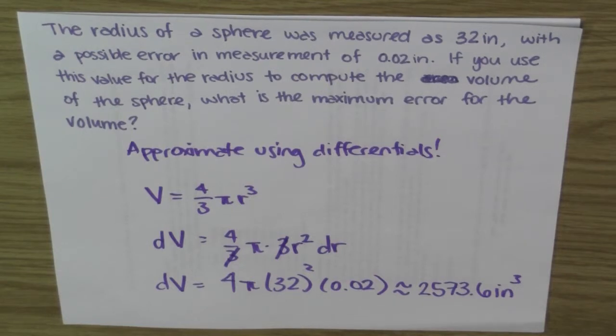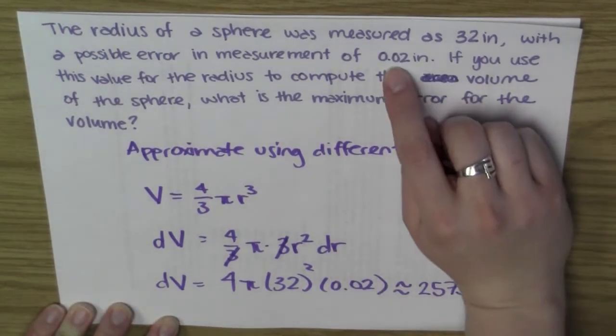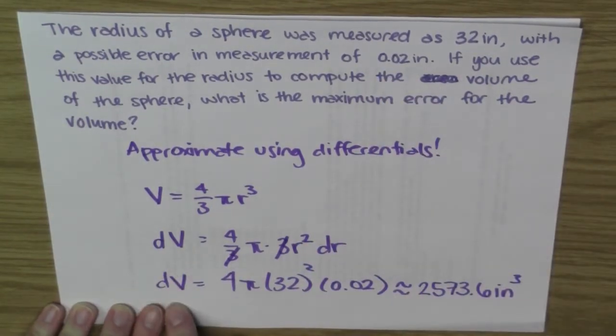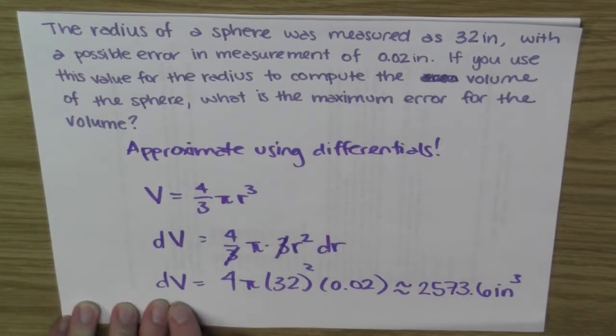So again, differentials are telling us what happens when I change just a little bit. dr tells me how much I change the radius by, just a little bit. And then dV tells me about how much the volume changes as a result.